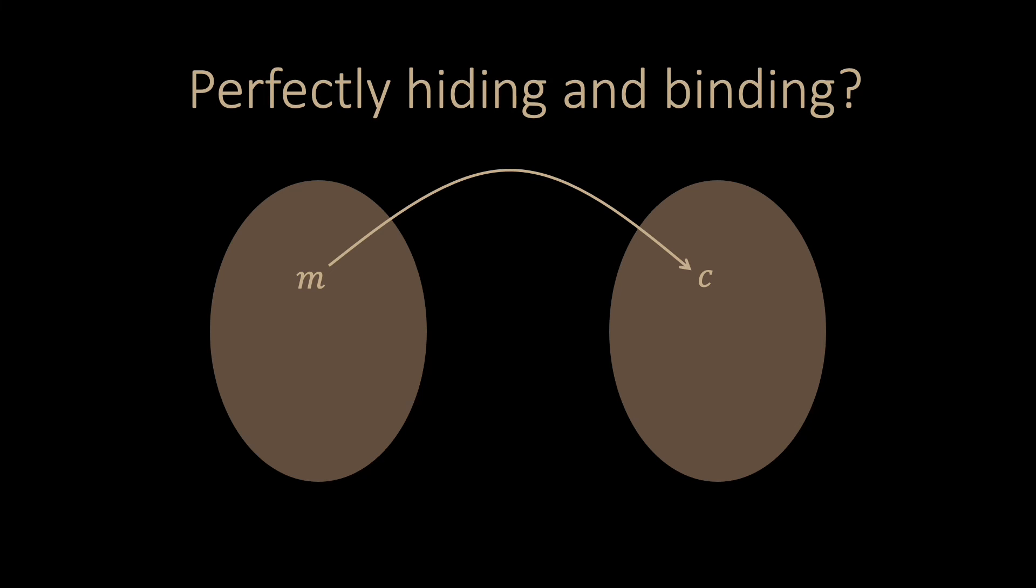But why compromise? Can we have both perfectly hiding and binding commitment schemes? We now show that such a commitment scheme cannot exist. Assume that a commitment scheme is perfectly binding. This means that Watson should not be able to change the commitment even if he is computationally unbounded. This can be the case if and only if there is only a unique value m that can be committed to c.